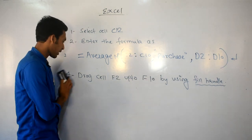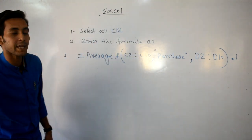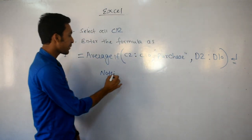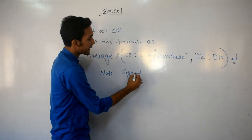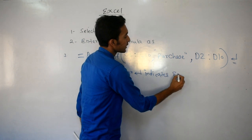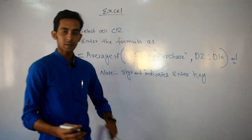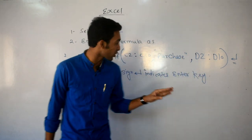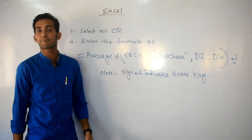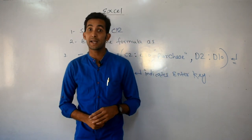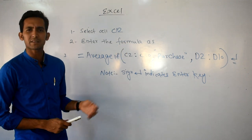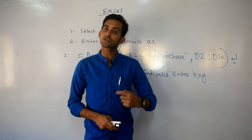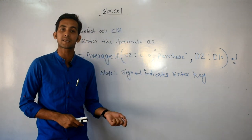Note: जो sign मैंने लगाया है वह Enter key को indicate करता है। यह 8-mark question था — पहले answer के 3 marks, दूसरे के 3 marks, और तीसरे (purchase department average) के 2 marks — total 8 marks। आने वाले 8-mark और 7-mark के questions भी ऐसे ही आसान होंगे। Notes scan करके upload करूँगा, आप download करके print कर लीजिए।